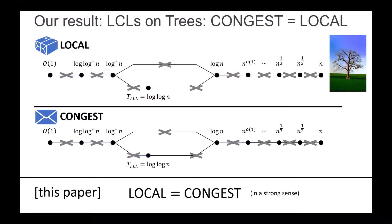So what we show is that the LOCAL model and the CONGEST model are equivalent on trees for LCL problems, and this equivalence is really in a strong sense: if you take some problem and determine its complexity in the LOCAL model — if it's, for example, log* n — then it's going to end up in the same asymptotic complexity class in the CONGEST model. This is true for the small complexities and also for the high complexities.